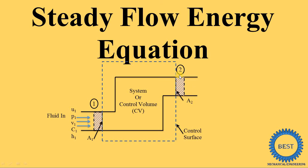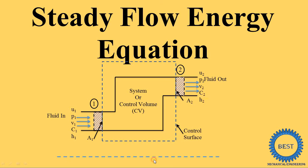Here is the outlet section, named section 2, where the fluid exits. The outlet parameters mentioned are U2, P2, V2, C2, and H2. This is the datum line, from which we measure Z1 and Z2.